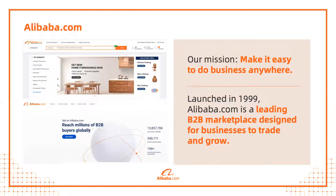A lot of folks conflate Alibaba.com with Alibaba Group and Jack Ma — the Amazon of China. While all of that is essentially true, Alibaba.com is actually one small business unit in the overall Alibaba Group. Interestingly, it is the oldest business unit, around over 20 years since 1999. It was Jack Ma's original vision — originally intended as a listing service, like a Craigslist for Chinese manufacturers to be discovered by the rest of the world.